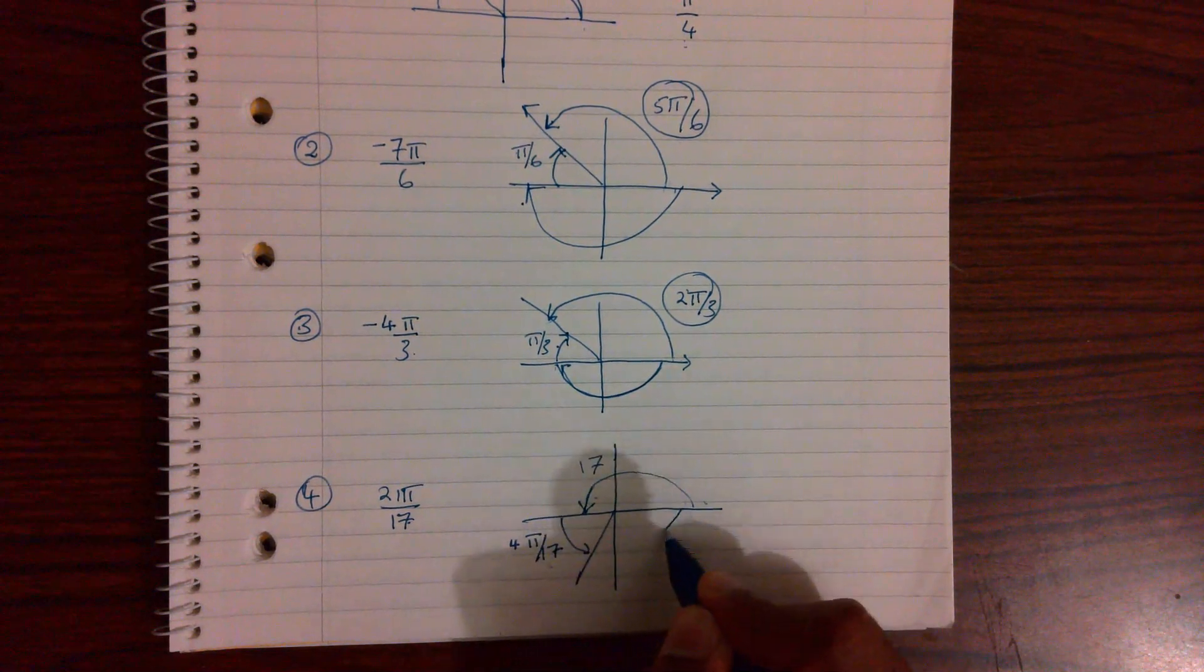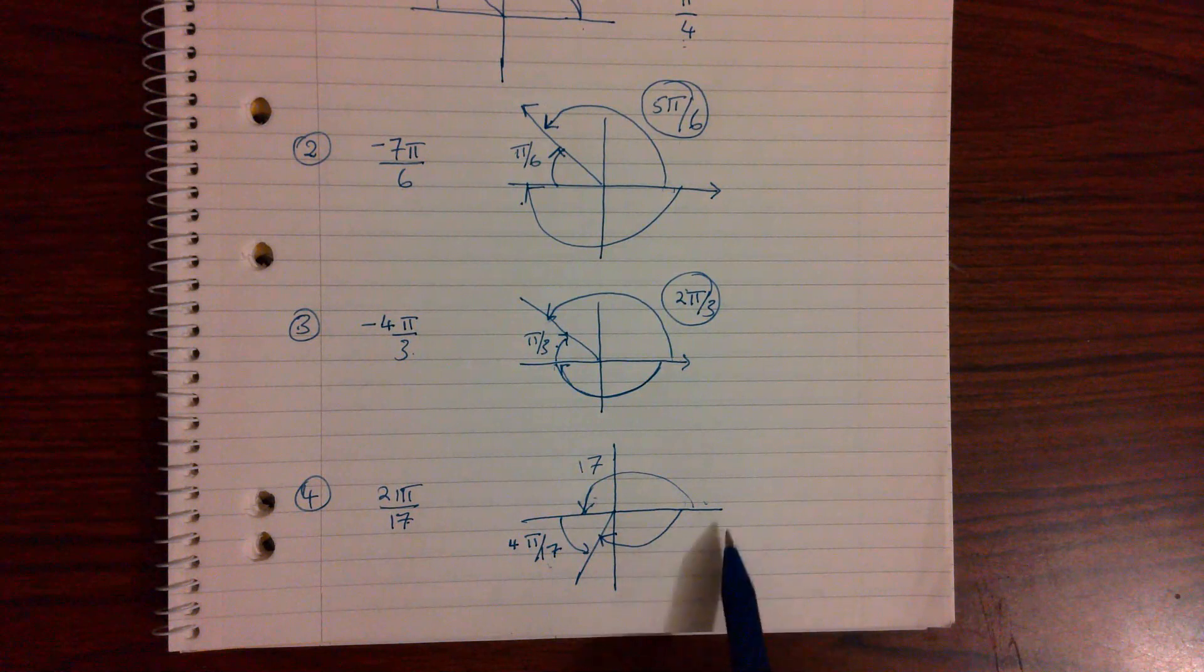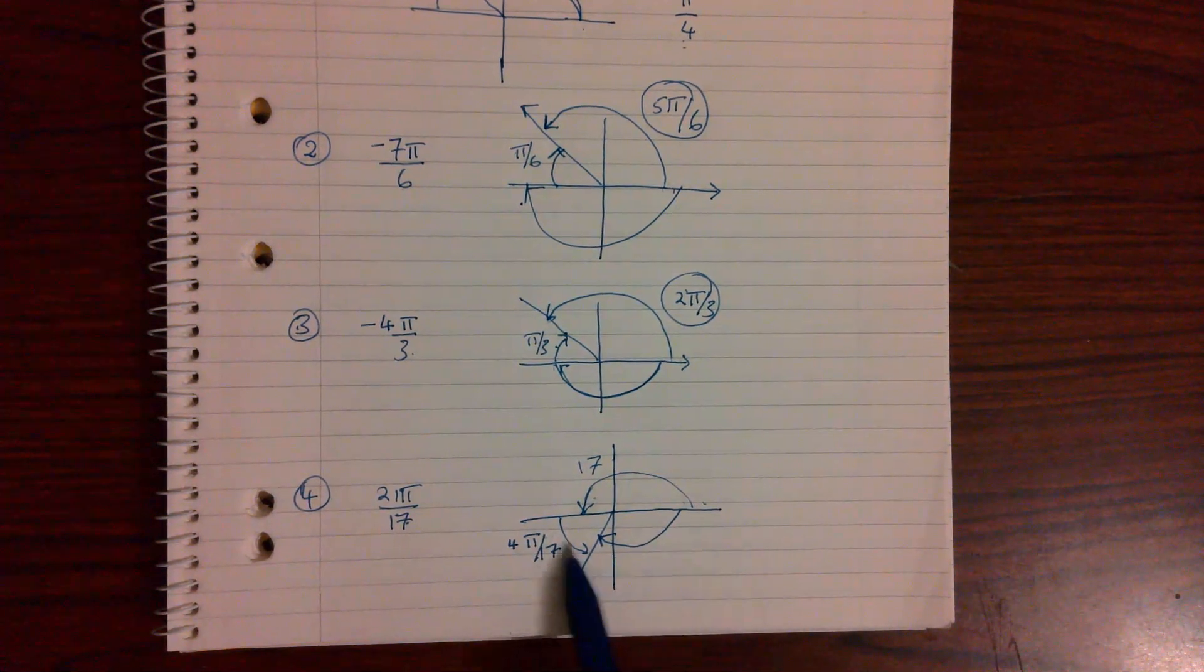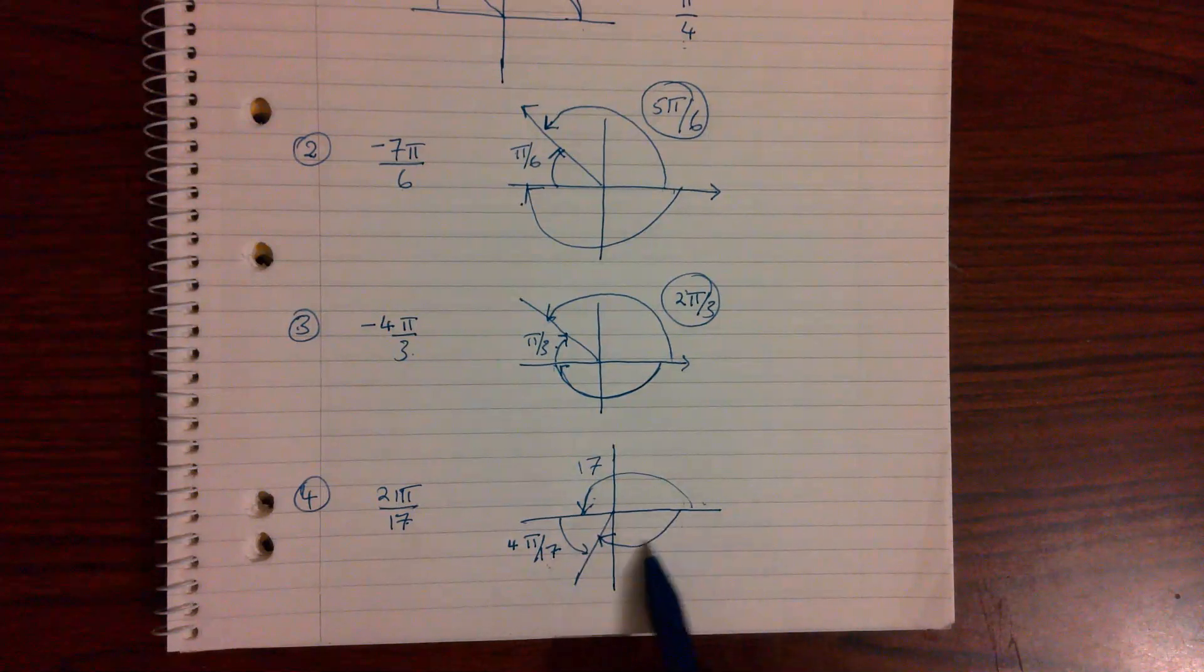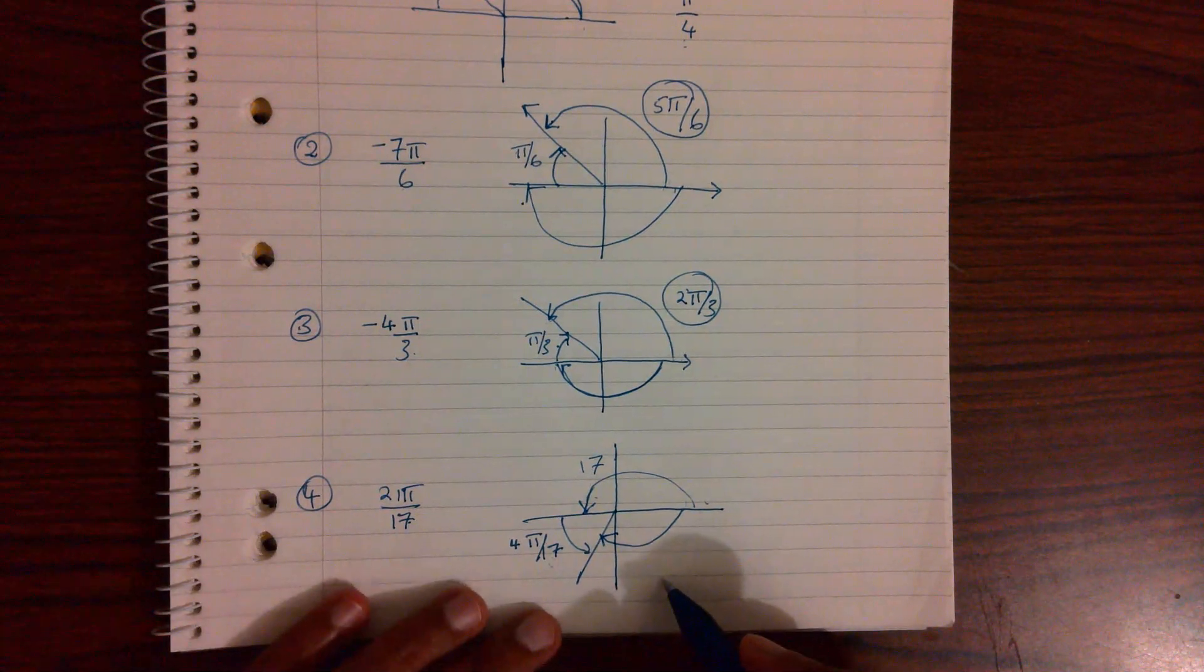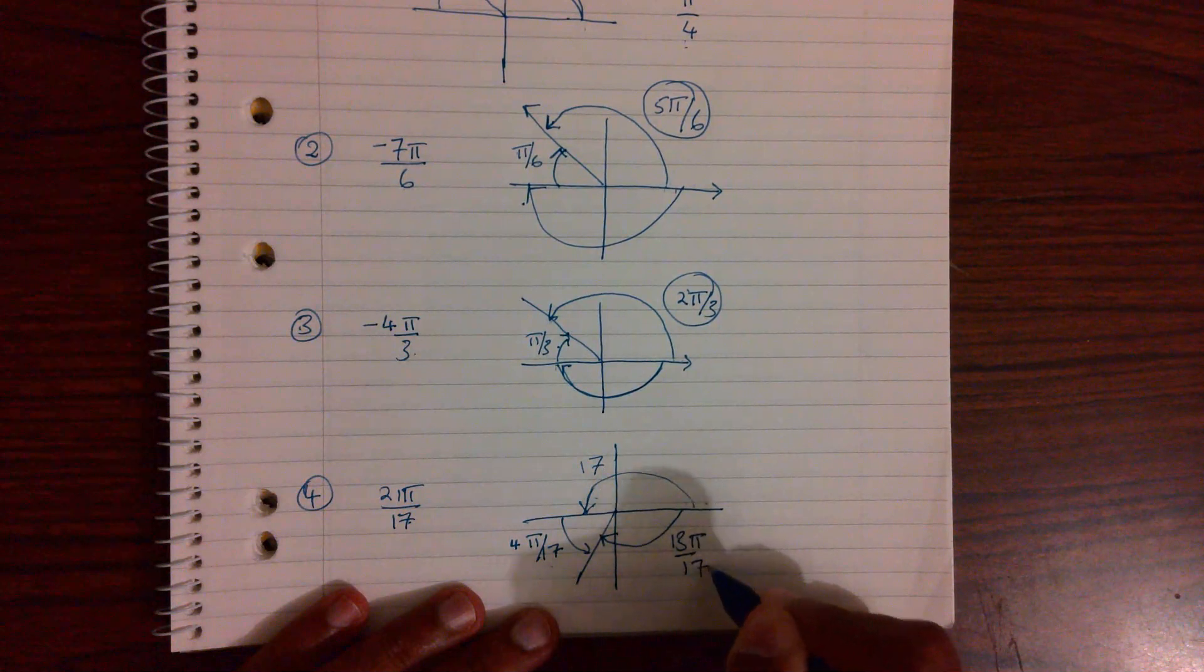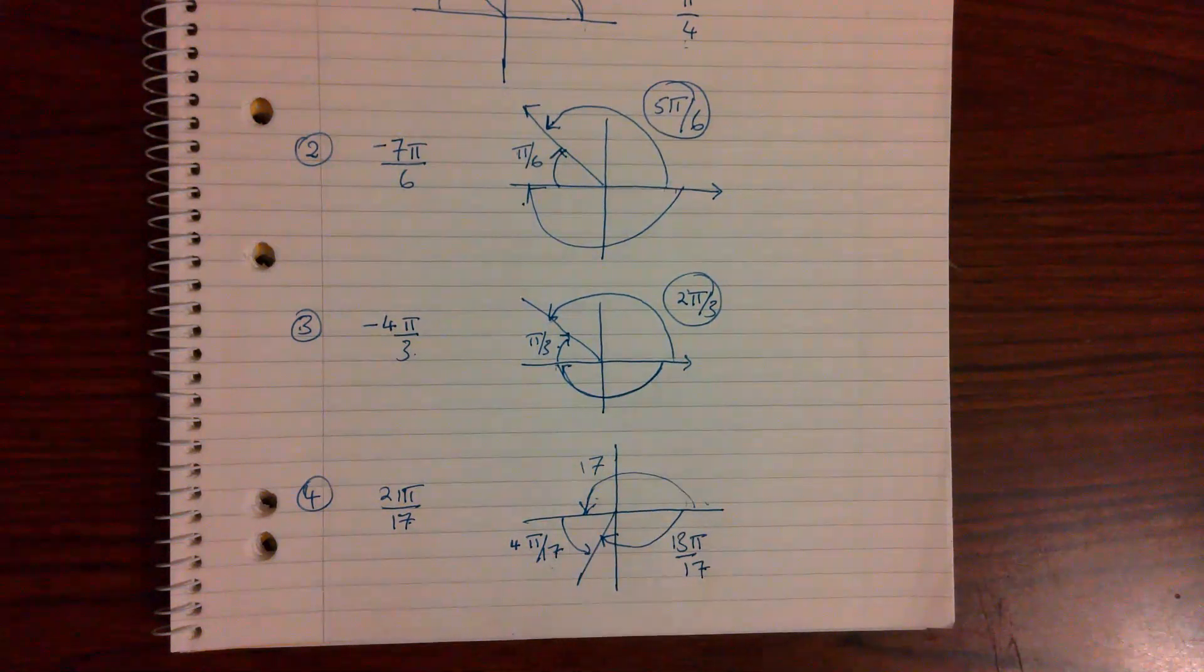So this will be my principal argument. And because this whole thing is 17, there's 4 in here. How many will that be? Well, 17 take away 4, which is 13. So negative 13π over 17. So that's it.